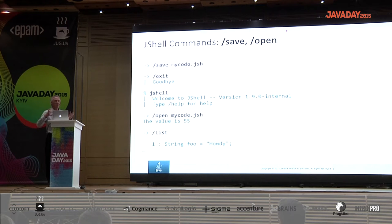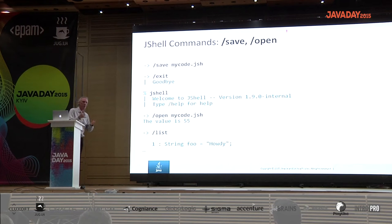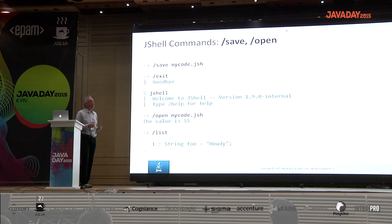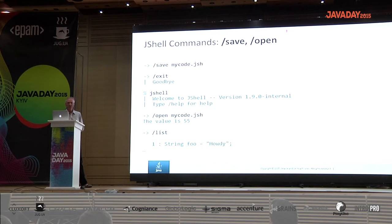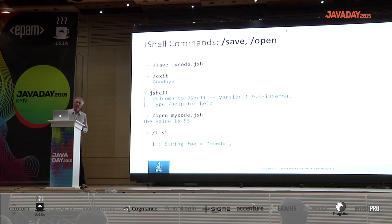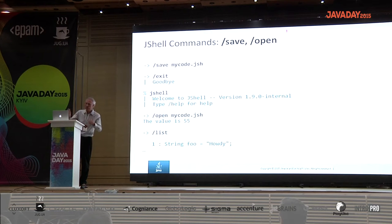In JShell you're exploring rather than creating programs, but you still want to be able to save your work and come back to where you were. You can use the /save command to save to a file, exit JShell, type 'jshell' again, open it back up, and it will be re-read and re-executed — do a /list and it's there.